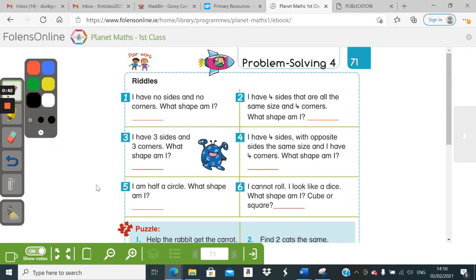Number one. I have no sides and no corners. What shape am I? Well, there was me thinking that all shapes have to have sides and corners. Because all shapes have straight lines in them, don't they? Do they?